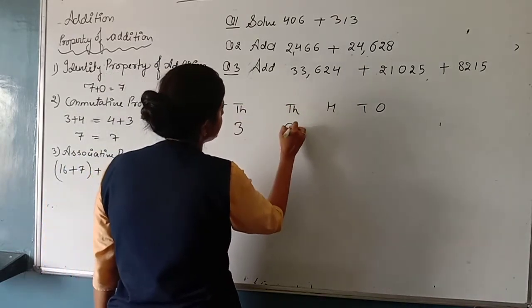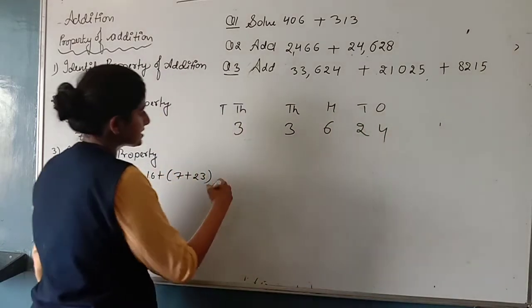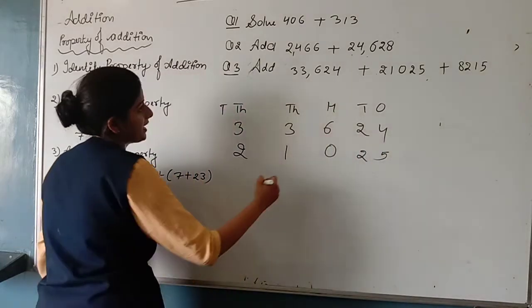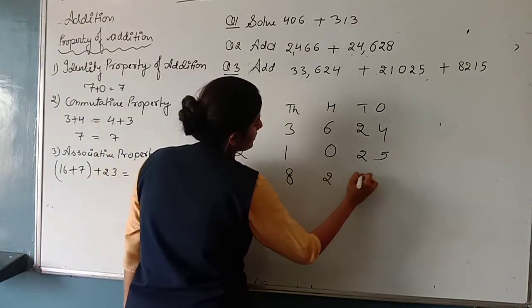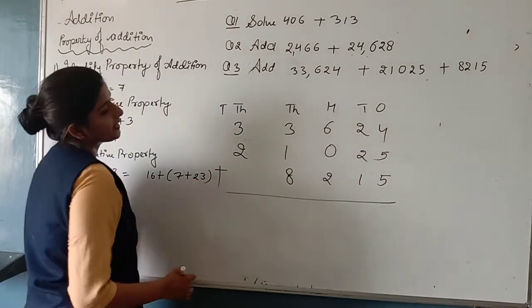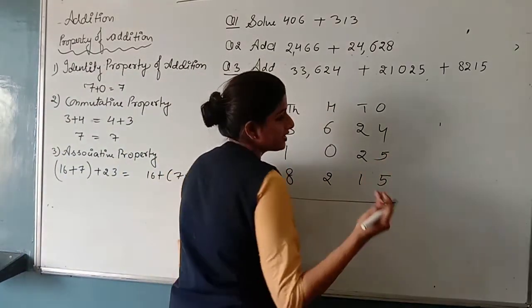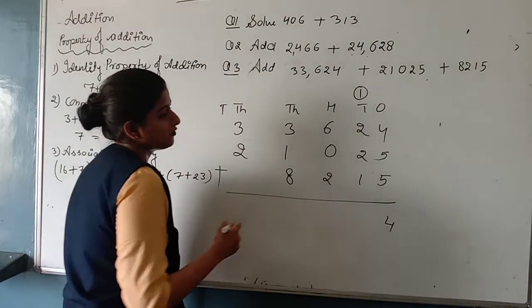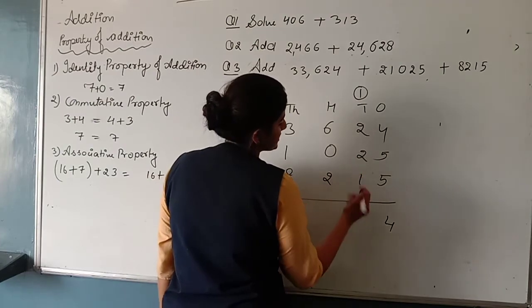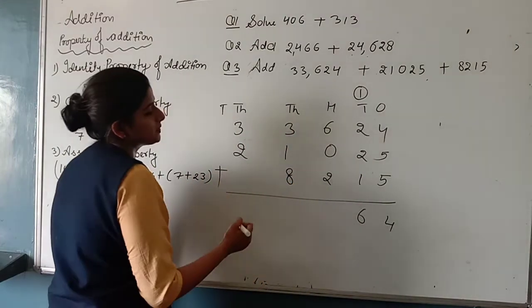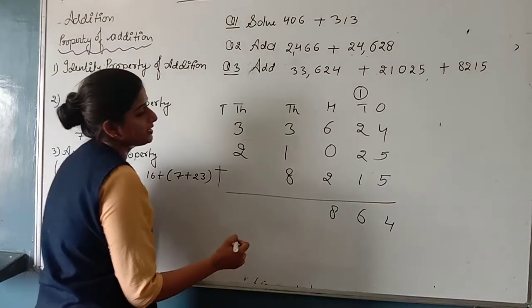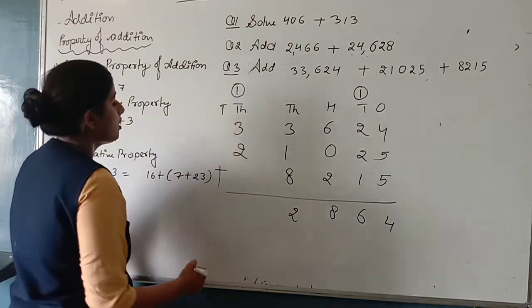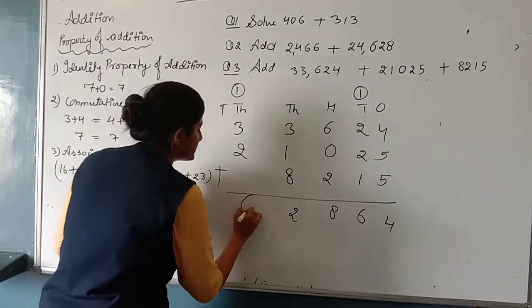Next we have 21,025. Next we have 8,205. How will we add this? 5 plus 5 is 10, 10 plus 4 is 14. Next will be the test forward: 1, 2, 3, 4, 5, 6. Here we get 6. 6 plus 2 is 8, 8 plus 1 is 9, 9 plus 3 is 12. Here we get 12. 1 will be carried and here we get 6. This is how we will write it.